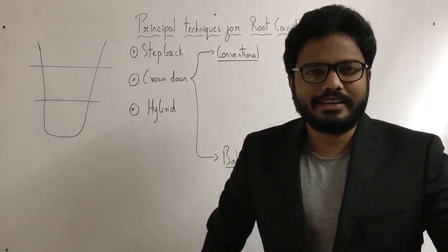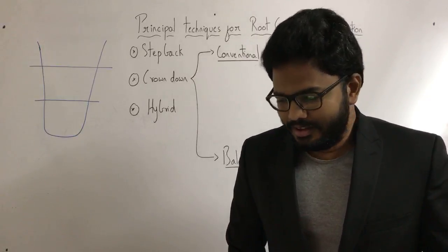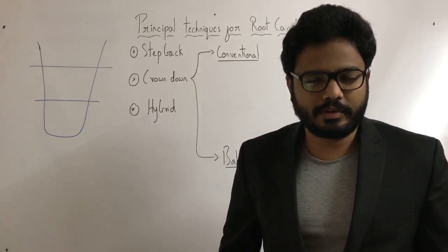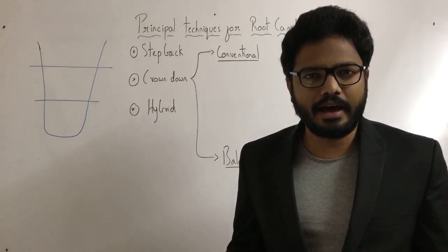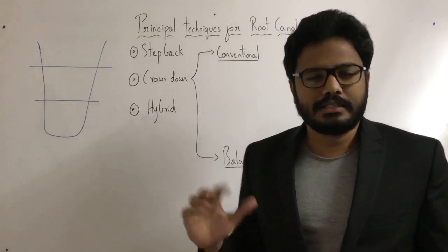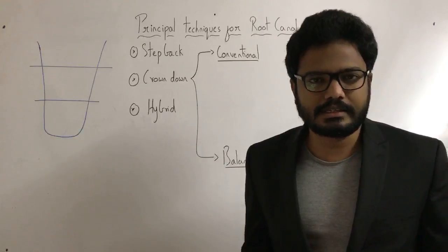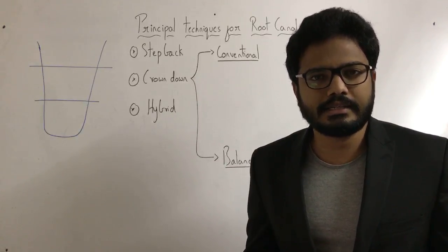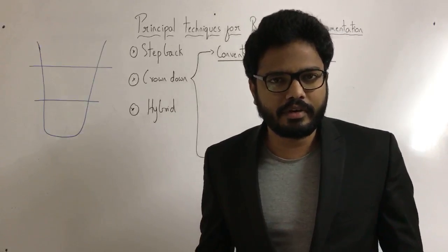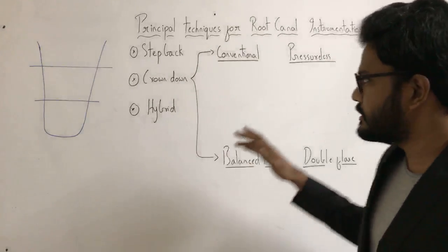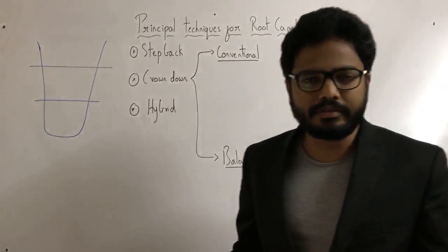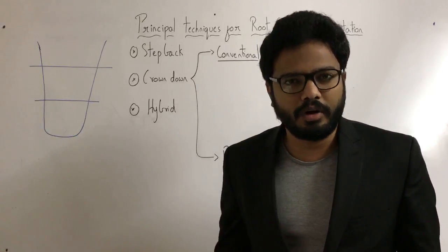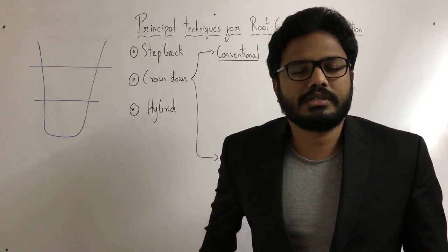Good evening everyone. I'm following Grossman 13th edition for today's discussion. So initially we have some summary of the topic which we're going to discuss today, and then we'll jump into textbook discussion. We'll break this entire session into two parts — 15 to 20 minutes summarizing all these concepts in brief, and then we'll go into the details of the literature and try to get some key points, like what's given in your Grossman.